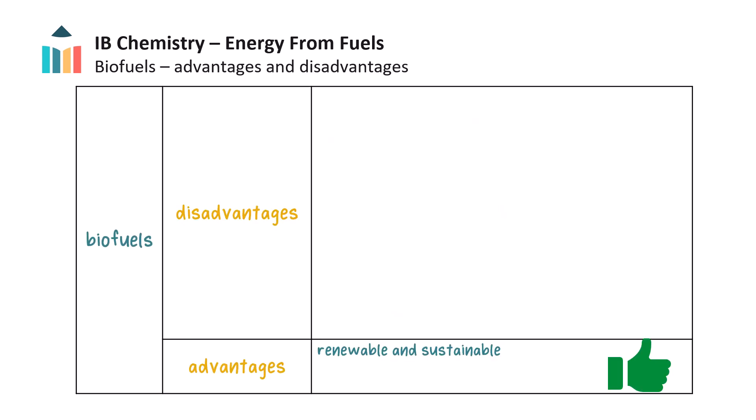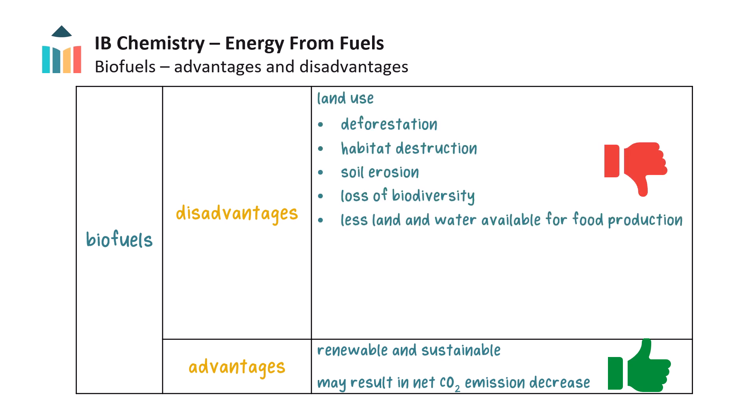The main advantage of biofuels is their renewable and sustainable nature; ethanol is produced quickly, with crops replanted to replace those used. Some experts believe that ethanol biofuel production results in overall lowered carbon dioxide emissions compared to fossil fuels. However, growing biomass for biofuels requires agricultural land, leading to deforestation, habitat destruction, soil erosion, and reduced land available for food production. Building biomass processing infrastructure is costly, making biofuels more expensive and less available than petrol and diesel, although some argue that the net cost of producing ethanol is cheaper than for fossil fuels. Growing and processing biomass demands high energy and resources, often using fossil fuels in the process.